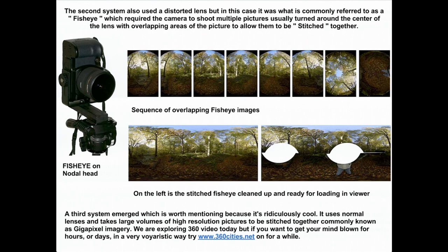During this time, and Google is actually very big into this too, a third system emerged worth mentioning because it's ridiculously cool. It uses normal lenses and takes large volumes of high-resolution pictures that can be stitched together — commonly known as gigapixel imagery. There are different gigapixel.org companies and guys that build motorized mounts that take tiny pictures on really long lenses, panning around to allow you to go deep into the 360. You're looking at a wide shot where you can zoom way in and see, for example, a dog standing on a street corner you would never have seen from the massive vista you're looking at. I suggest checking that out if you want to burn a lot of time.